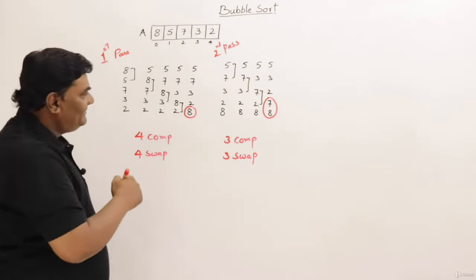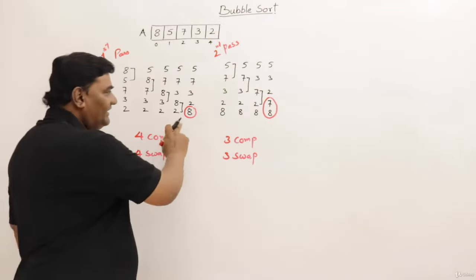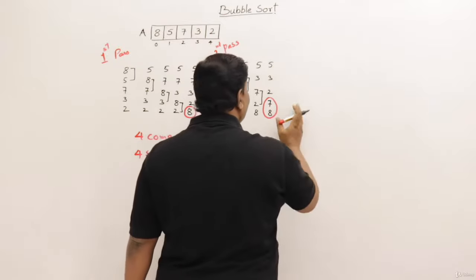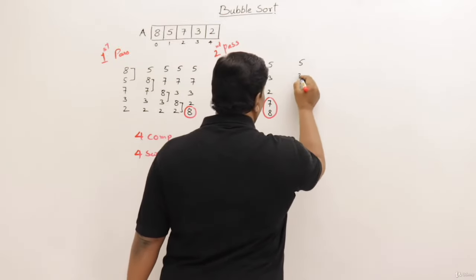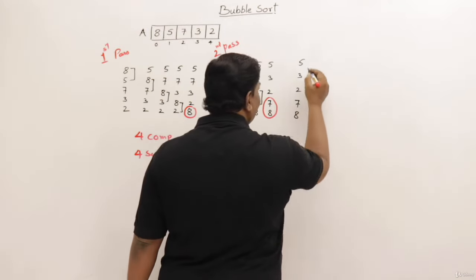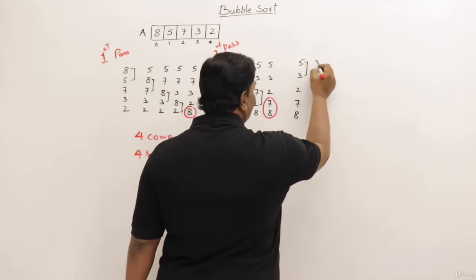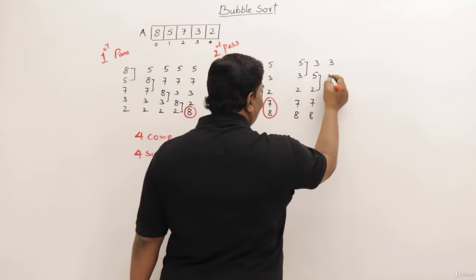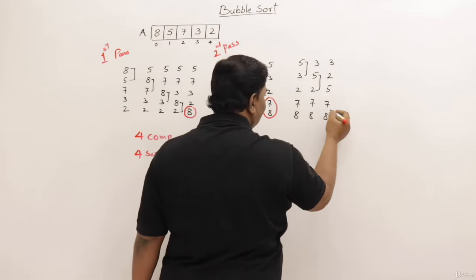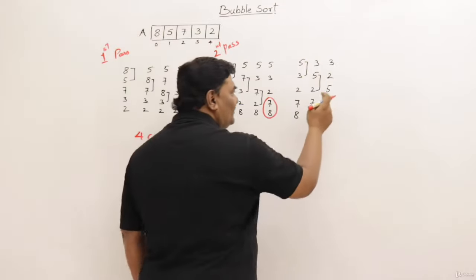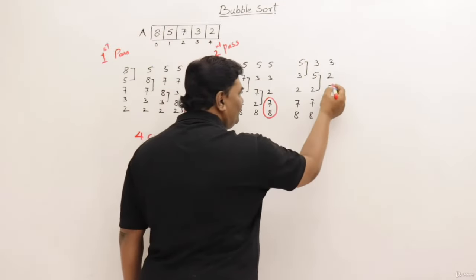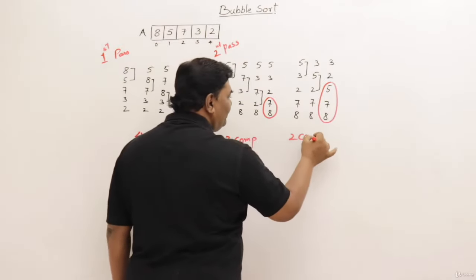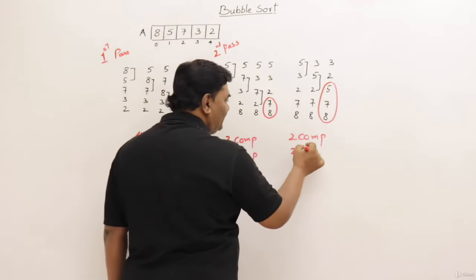Two passes are completed and two elements are sorted: seven and eight. Continuing with the third pass on five, three, two, seven, eight: five is greater than three, so three goes up and five comes down. Then comparing five with two: five is greater, so we get three, two, five, seven, eight. We stop there since comparing five with seven or eight is unnecessary — they are already sorted. After the third pass, three elements are sorted. Two comparisons and a maximum of two swaps were performed.